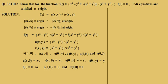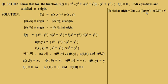Now we will find the partial derivatives at the origin directly. ∂u/∂x at origin is given by the limit as x→0 of [u(x,0) − u(0,0)] / x. Since u(x,0) = x and u(0,0) = 0, this becomes the limit as x→0 of x/x, which equals 1.